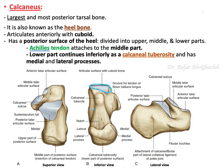Looking at the superior view of the calcaneus: anteriorly is the cuboid facet, and most posteriorly is the heel. The articular surface for the cuboid is located at the anterior end.